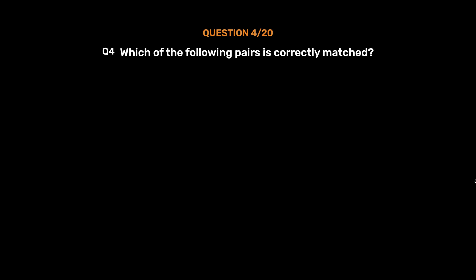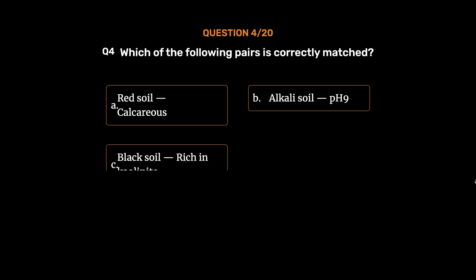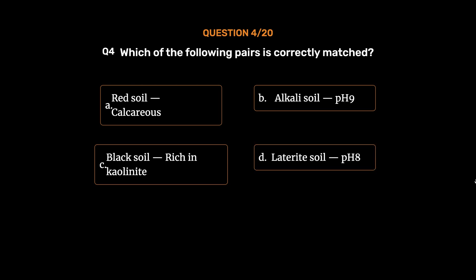Question number 4. Which of the following pairs is correctly matched? Option A, Red soil, calcareous; option B, Alkali soil, pH 9; Option C, Black soil, rich in kaolinite; option D, Laterite soil, pH 8. The correct answer is option B, Alkali soil, pH 9.